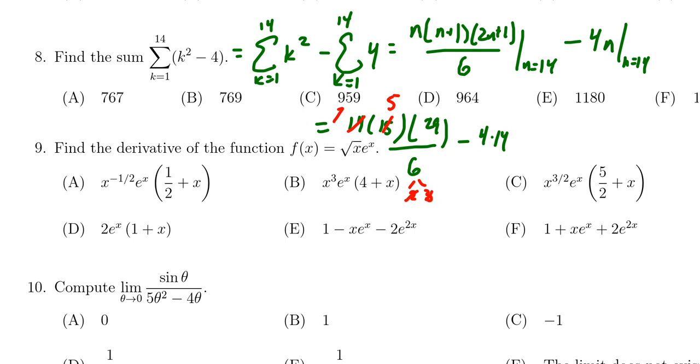we're going to take 7 times 5 times 29 which is going to give us 1,015. We also have 4 times 14 which is 56.